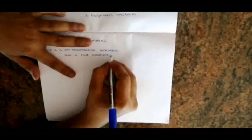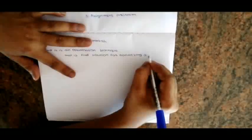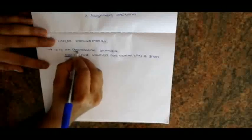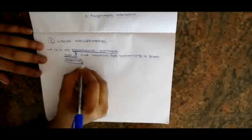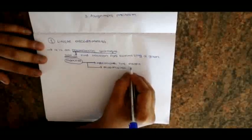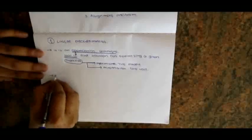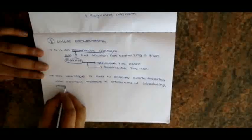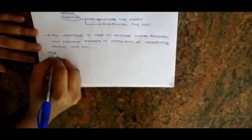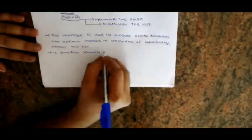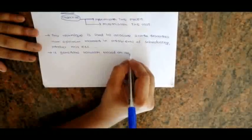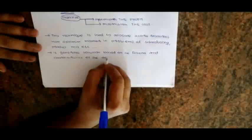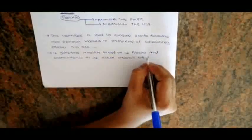What is linear programming? It is an optimization technique that finds solutions for optimizing a given objective. The technique is used to allocate scarce resources in an optimum manner in problems of scheduling, product mix, etc. It generates solutions based on the features and characteristics of the actual problem or situation.